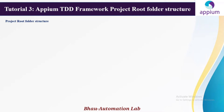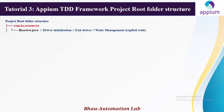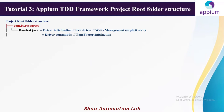In our TDD framework structure, the first commonly used folder is called com.bs.resources. 'com' stands for commercial, 'bs' can be any name like qa, resources, or whatever you define. Inside this resources package, we have a common class called BaseTest.java. Inside BaseTest.java, we initialize the driver, manage waits like explicit waits, and handle all driver-related commands and page factory initialization. These five concepts are handled inside BaseTest because it is a commonly used class.